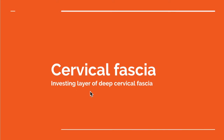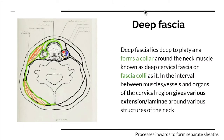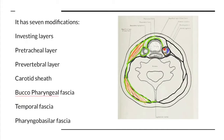Let's start talking about the investing layer of the deep cervical fascia. In the previous video we saw that the deep fascia lies deep to the platysma and forms a collar around the neck, also called the fascia coli, and it gives various extensions or lamina which surround the various structures of the neck. It had seven modifications: the investing layer, the pre-tracheal layer, the pre-vertebral layer, the carotid sheath, the buccopharyngeal fascia, the pharyngobasilar fascia, and the temporal fascia. In this video let's talk about the investing layer.